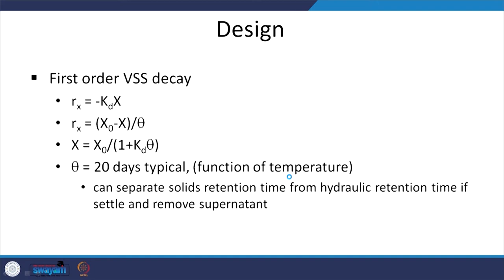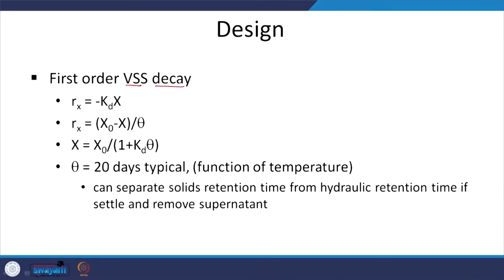In aerobic digestion, we are degrading the volatile suspended solids themselves. In the activated sludge process we promoted growth of microbes measured as MLVSS to degrade the waste. Here, the waste we are concerned with degrading is the microbial mass measured by volatile suspended solids — so we are concerned with decay of volatile suspended solids. The rate equation is: Rx equals minus kd times X, where X is the concentration.